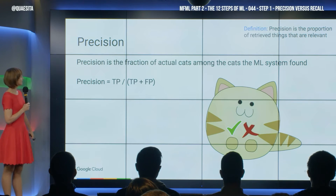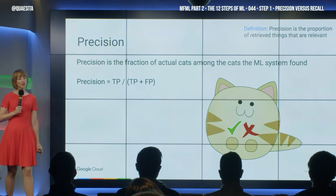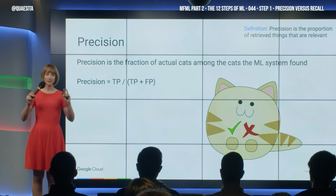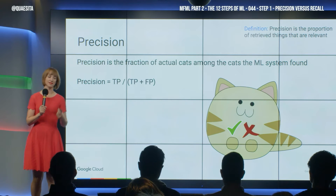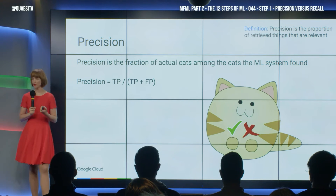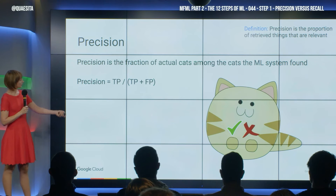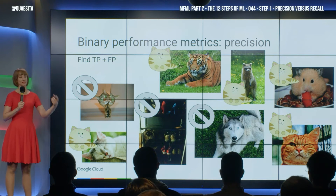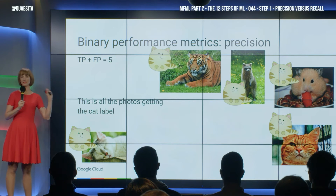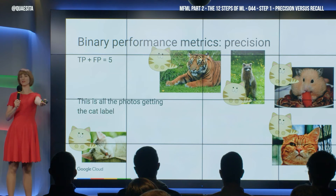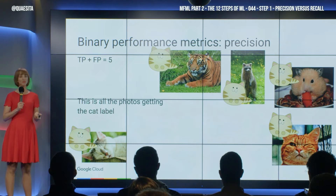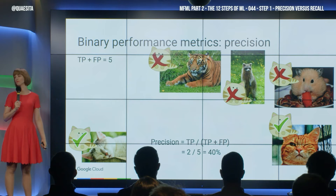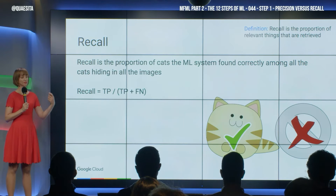Let's look at the other metrics. First, precision. Precision is the fraction of actual cats among the cats that the system found. To compute that metric, we ignore all the things it didn't find as cats — gone. This is our denominator: all the ones it presented to us as cats. Of them, how many were actually cats? Two — giving us a precision of two out of five, 40%.